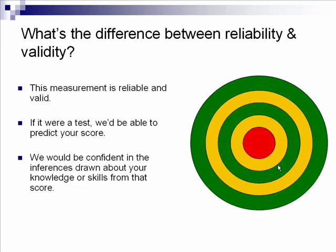Let's take a look at another example. Notice here that all of the darts hit in the same place, meaning that they are reliable, but also they hit the bull's eye, meaning that we have validity. So if this were a test, we'd be able to predict your score, and we'd be confident in the inferences drawn about your knowledge or skills from that score.